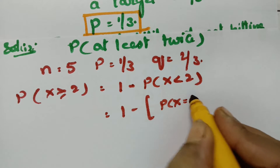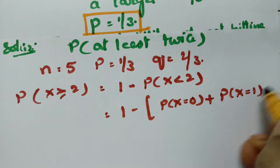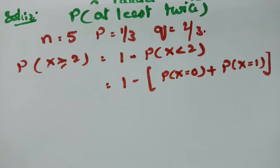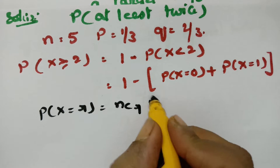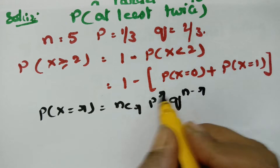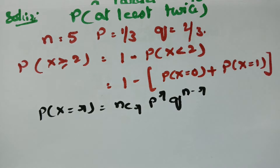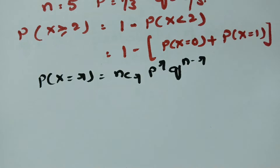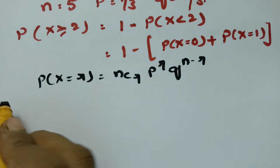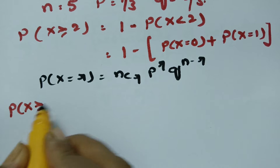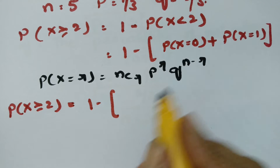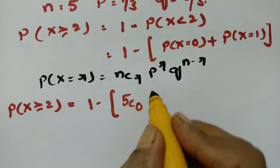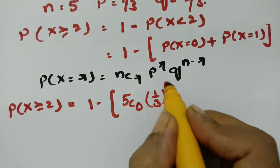Probability of X less than 2 means probability of X=0 plus probability of X=1. According to the binomial distribution formula: P(X=R) = NCR × P^R × Q^(N−R). All values are ready. Now I am going to substitute. Probability of X≥2 is equal to 1 minus: 5C0 × (1/3)^0 × (2/3)^5, plus for R=1.